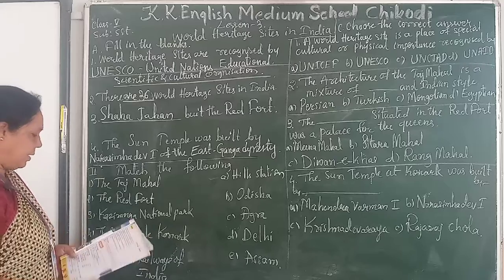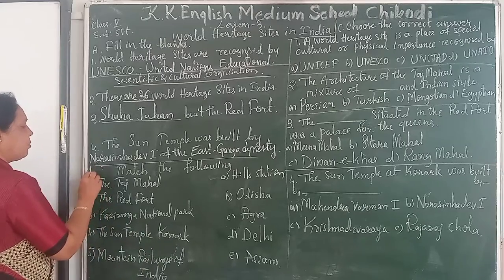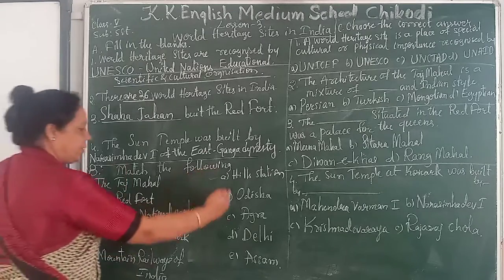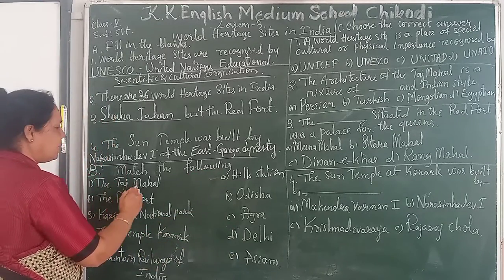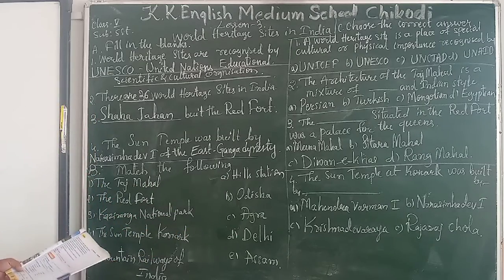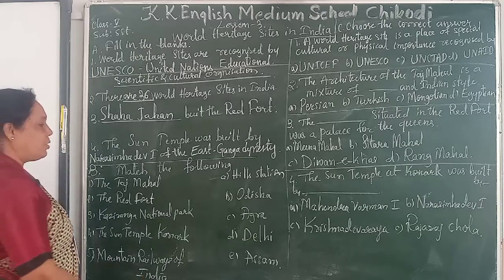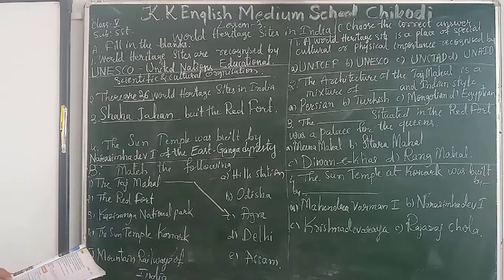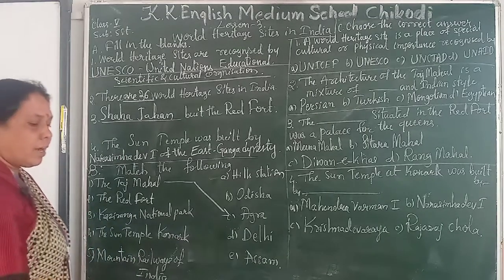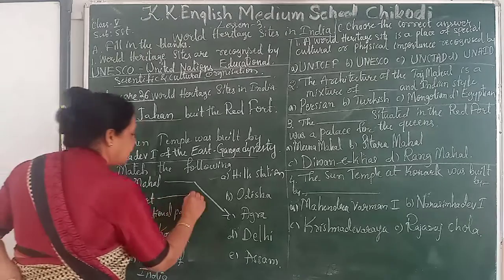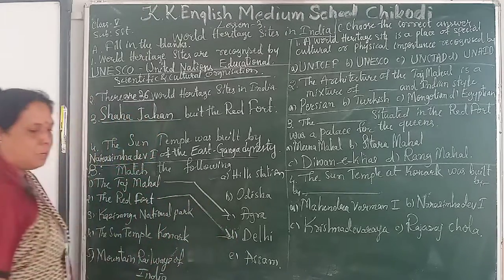So these are the fill in the blanks answers. Part B is match the following. Here both sides have written words, so you have to match the correct repeated words. First one is the Taj Mahal — the Taj Mahal is matched to Agra. Then second one is the Red Fort — the Red Fort is in Delhi, so matched to Delhi.